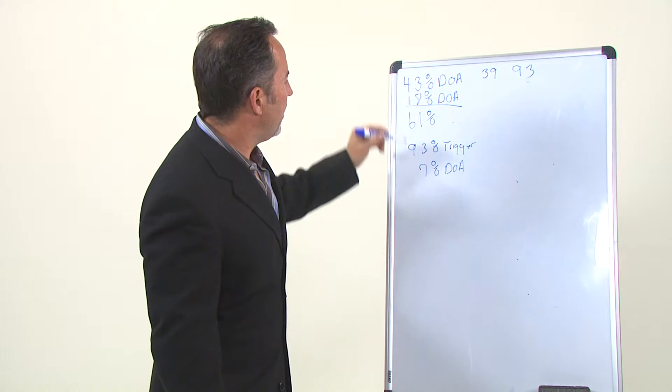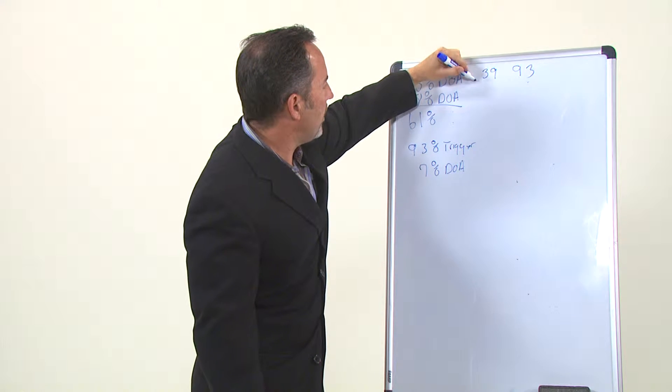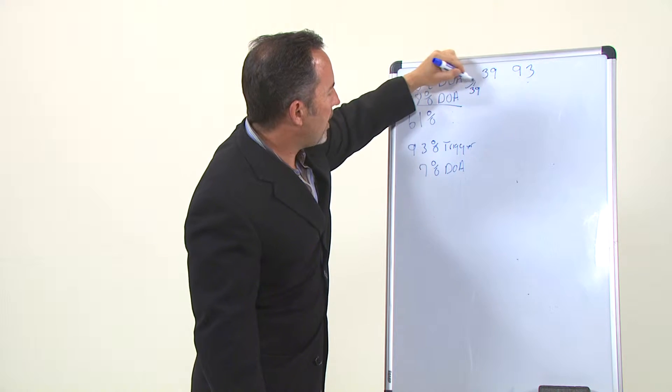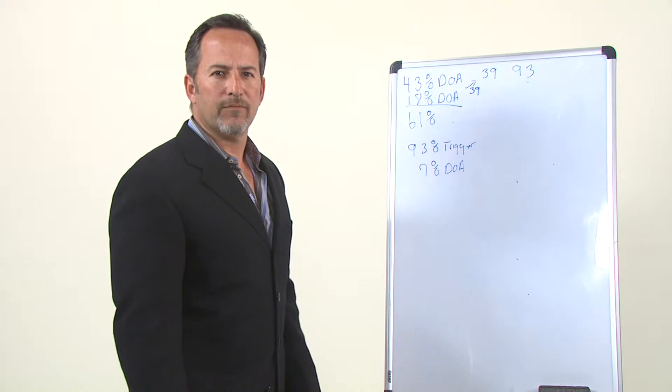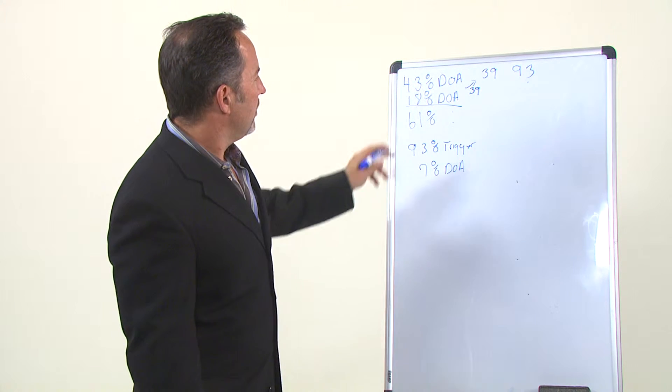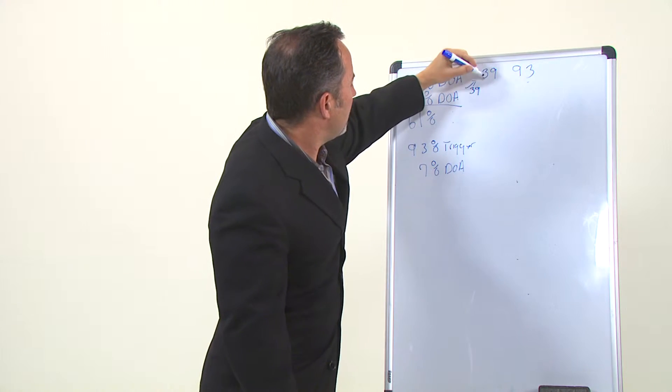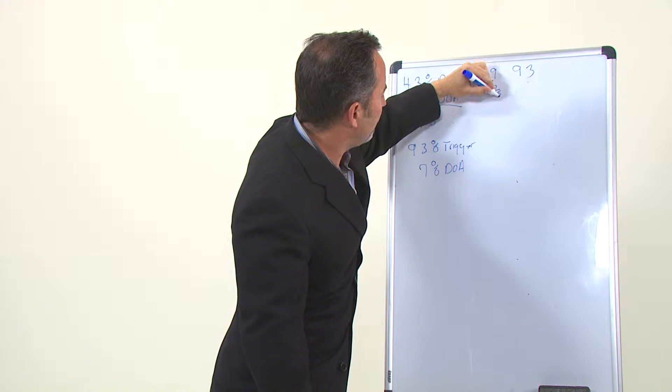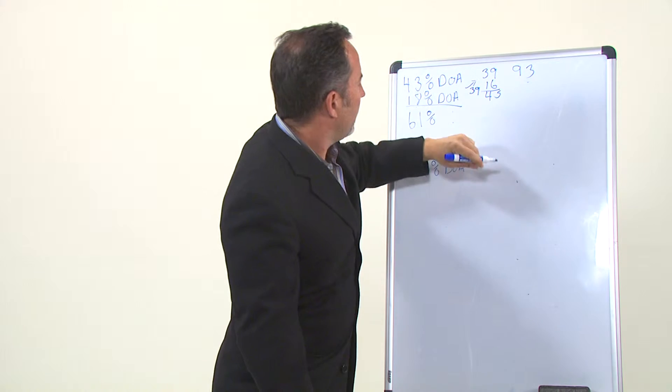Now the one thing you have to remember is, this formula never goes away. So if you go out and sponsor these 39, go out and sponsor one each, for 39, 61% of them are going to break, which would be 23. So 23 from 39 would leave you 16 people. So you came out of this with 16 people.